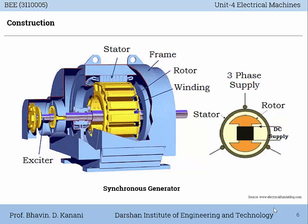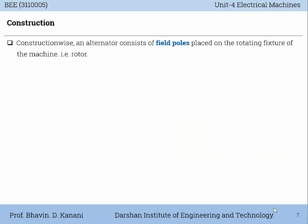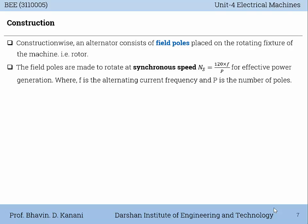You can see there are so many parts. Among them, stator, rotor and exciter are the main parts. Construction wise, an alternator consists of field poles placed on the rotating fixture of the machine, that means on the rotor. The field poles are made to rotate at synchronous speed, given by the equation Ns = 120F / P, where F is the alternating current frequency and P is the number of poles.